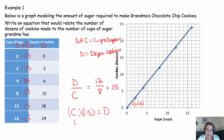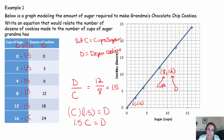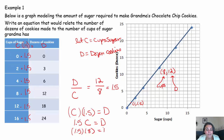Normally we write the constant first, so the equation is 1.5C = D. We can verify: the point (8, 12) means 8 cups of sugar and 12 dozen cookies. Substituting: 1.5 times 8 equals 12. That's correct — 12 dozen cookies. So there's your equation.